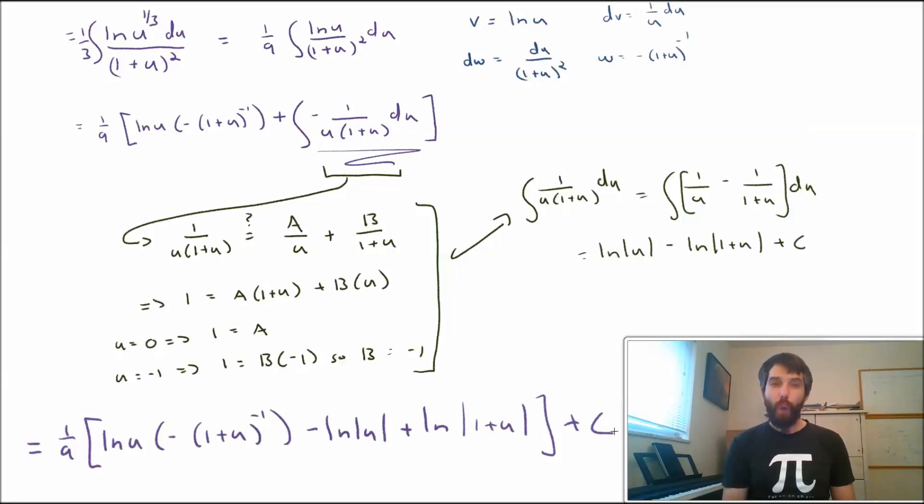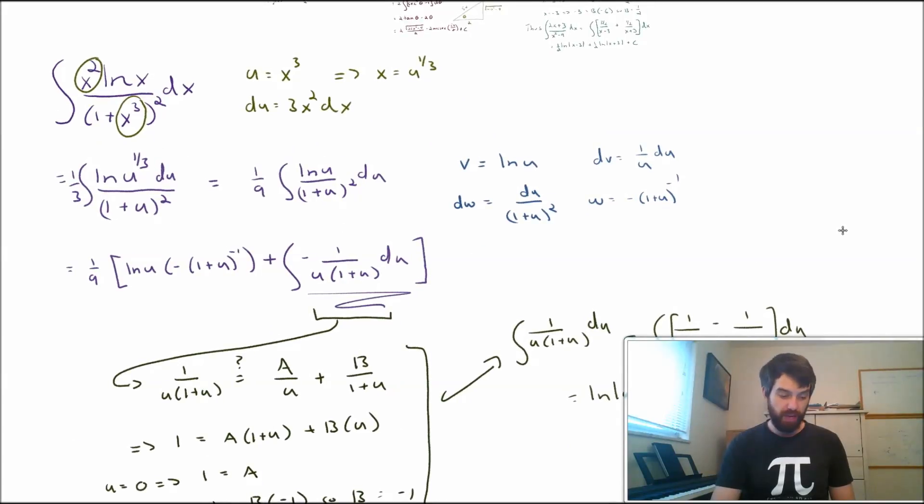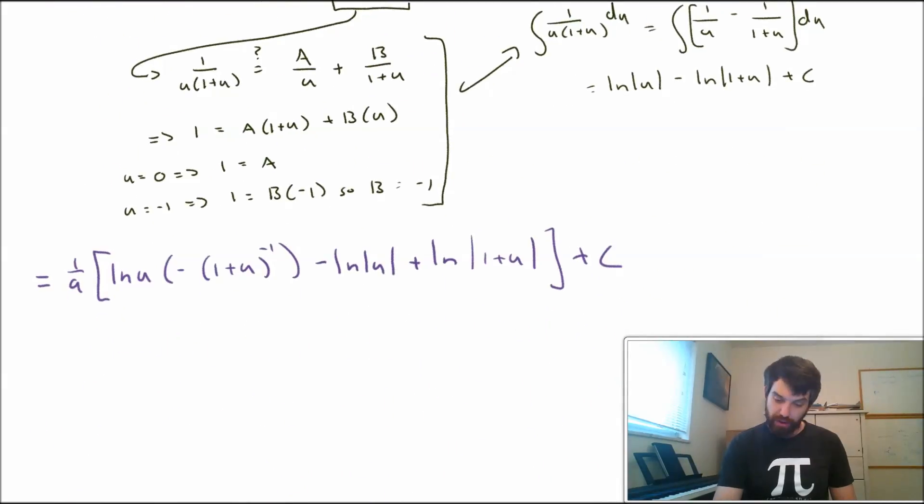And I'm not quite done yet because I've written my final answer all in terms of u, but we had made a u sub all the way back at the beginning. We had denoted that u was just going to be equal to x cubed. So in my final answer, I need to come and substitute all of my u's for x cubed. So this is going to be 1 ninth the natural log of x cubed minus 1 plus x cubed to the minus 1, minus the natural log of x cubed plus the natural log of 1 plus x cubed, finally plus c.